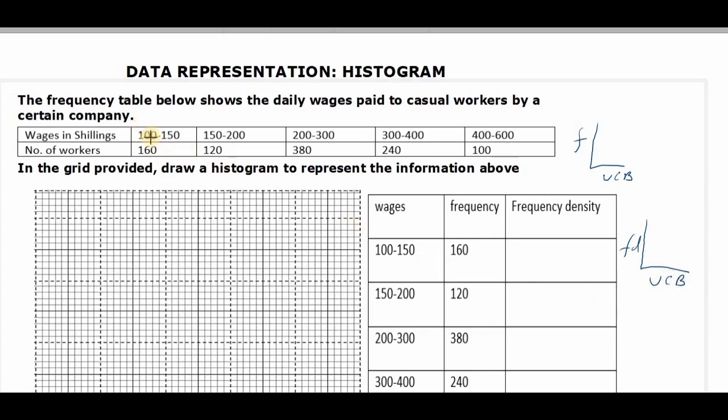For this particular case, for the first class we have the class interval as 50. The next one is 50, that is 200 minus 150. The next one is 100, then 100, then 200. So that means it's not uniform. And for that particular case, we'll therefore be plotting frequency density against the upper class boundary.